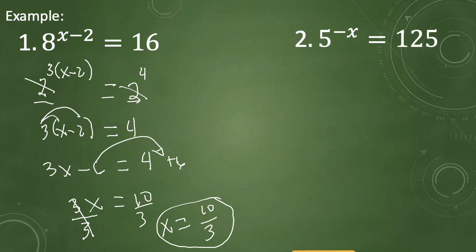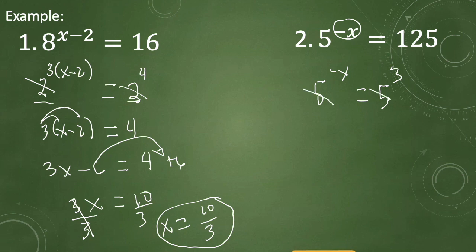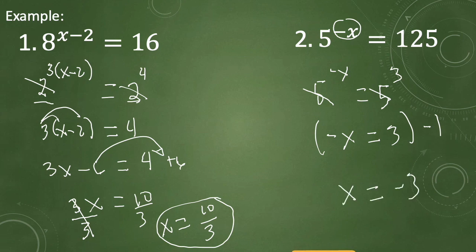Let's proceed with example number 2: 5 raised to negative x equals 125. We copy 5 raised to negative x, then express 125 with base 5 — 125 equals 5 raised to the 3rd power. We now have the same base 5, so we drop it and are left with negative x equals 3. Multiplying both sides by negative 1 gives x equals negative 3.